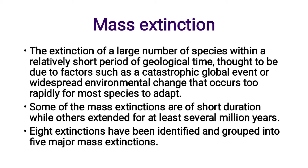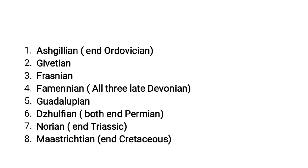Eight extinctions have been identified and grouped into five major mass extinctions: 1. Ashgillian — end of Ordovician; 2. Givetian; 3. Frasnian; 4. Famennian — all three being Late Devonian; 5. Guadalupian; 6. Djulfian — both end-Permian; 7. Norian — end of Triassic; 8. Maastrichtian — end of Cretaceous.